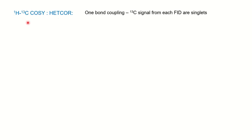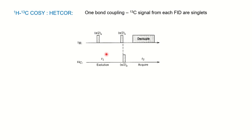Now we will talk about the proton-C13 COSY — that is, correlation spectroscopy — HETCOR, heteronuclear, because the two nuclei are hetero: one is proton, the other is carbon-13. In HETCOR we see one-bond coupling; the carbon-13 signal from each FID will be a singlet because we are talking about one-bond coupling, so other couplings will be removed. In the pulse sequence you can notice two channels — one for proton, one for C13 — with an evolution period and an acquisition period where the decoupler is on to remove remote coupling, giving only the one-bond coupling. The FID is recorded from the C13 channel, which is an insensitive nucleus, so the sensitivity of the spectrum will be less.